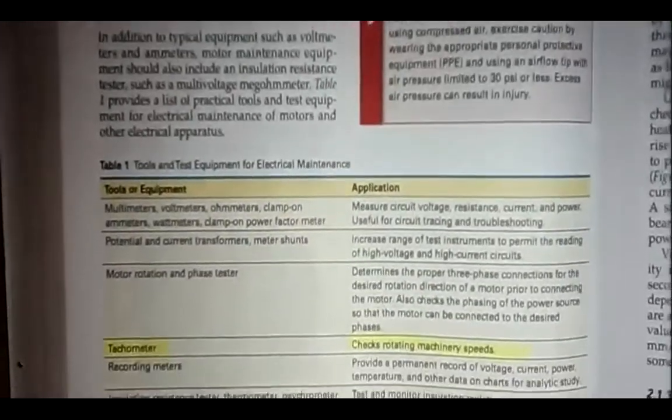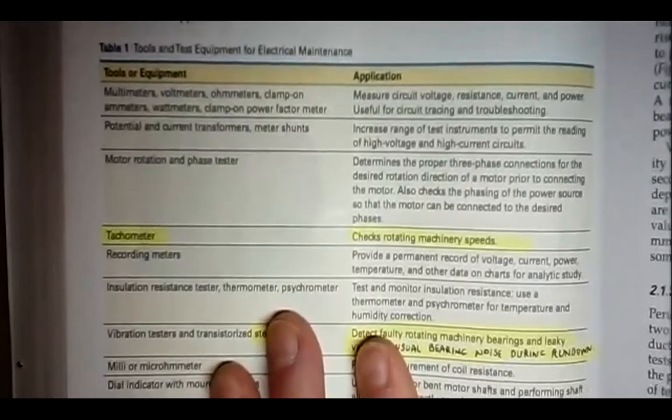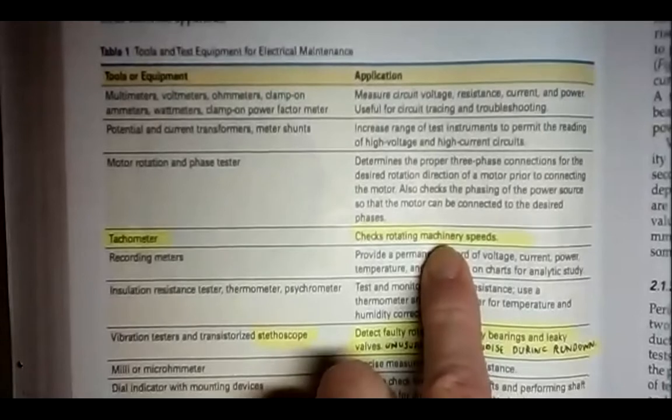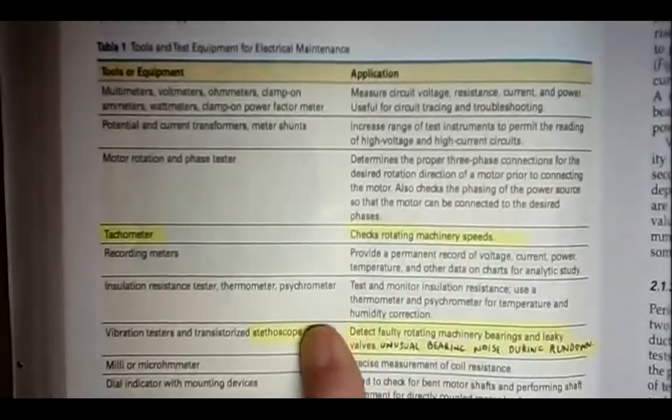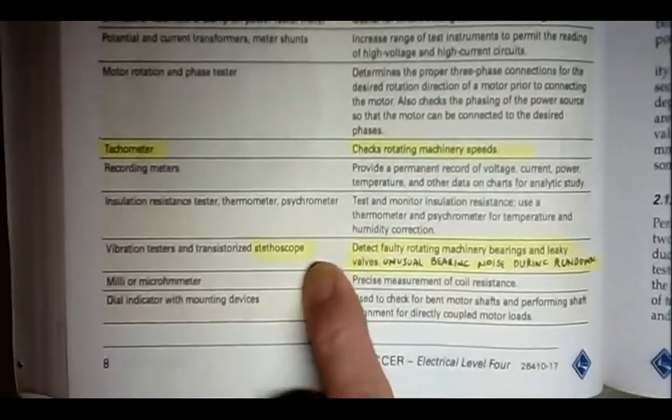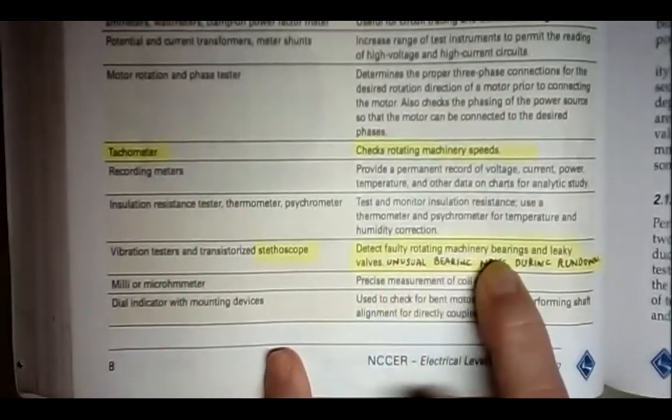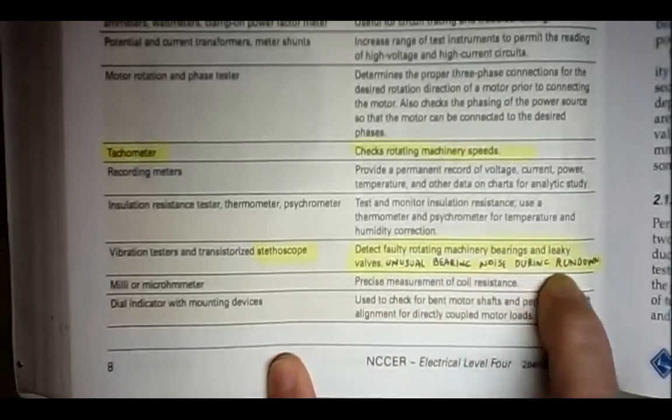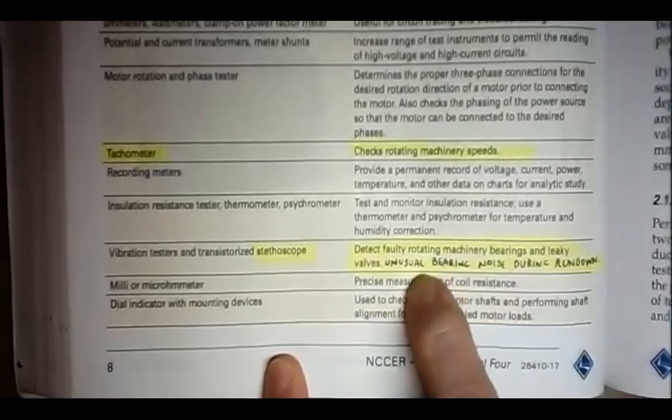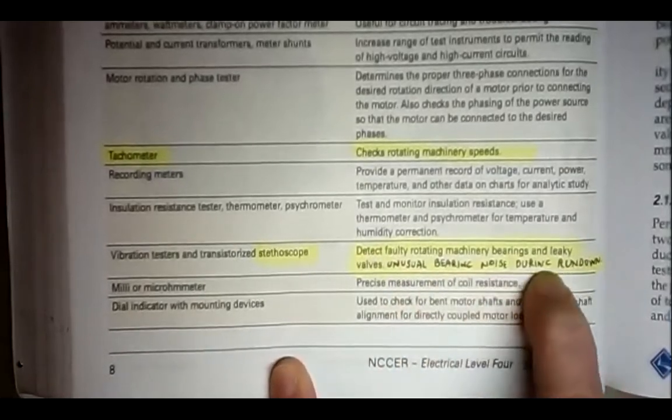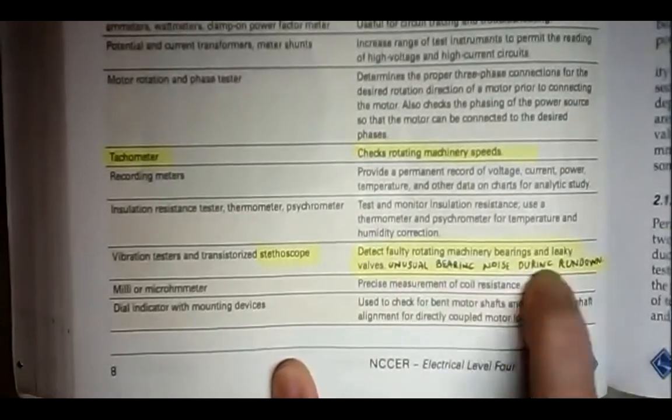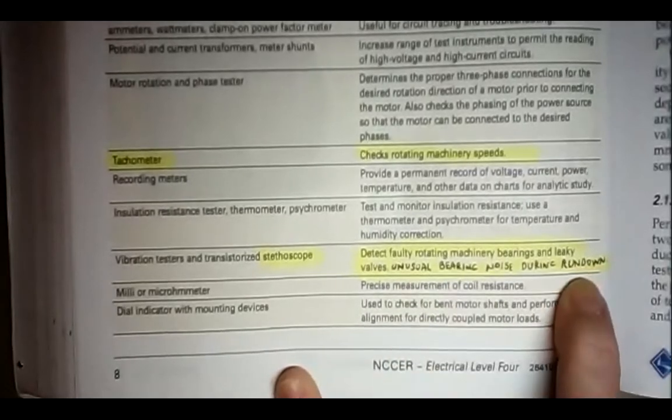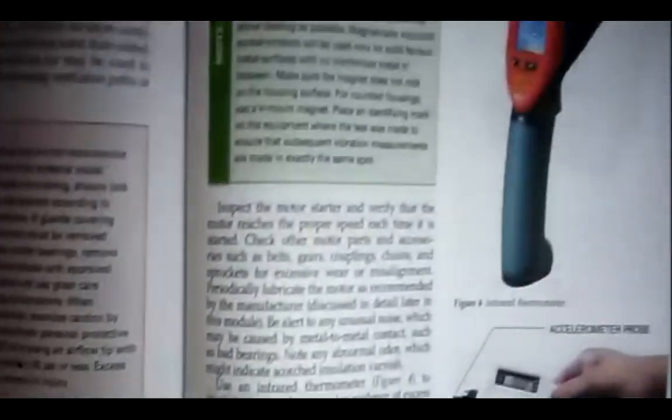On the bottom of page eight, it says tools and test equipment for electrical maintenance. You can use a tachometer. Check the rotating speed of the motor. Make sure that it's within specs. You can use a stethoscope. It detects faulty rotating machinery bearings and leaky valves. If there's unusual bearing noise during rundown, like you run the motor and then you turn the motor off and it's running down, you can listen to it. And if the bearings have a lot of slip in them, a lot of play, you'll hear a lot of chatter, a lot of noise going on in there while the motor is actually slowing down.